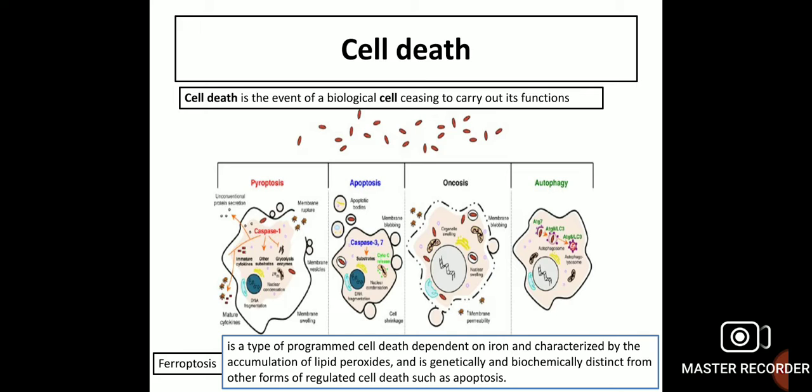The types of cell death include pyroptosis, apoptosis, oncosis, and autophagy. A newer type is ferroptosis — a form of programmed cell death dependent on iron, characterized by accumulation of lipid peroxides, and genetically and biochemically distinct from other forms of regulated cell death such as apoptosis.